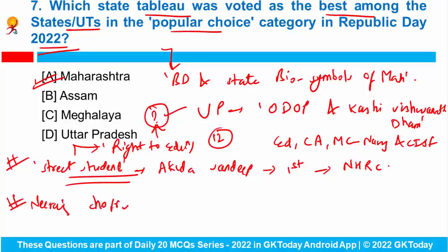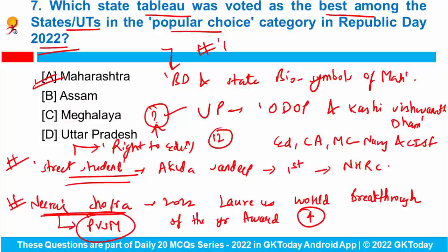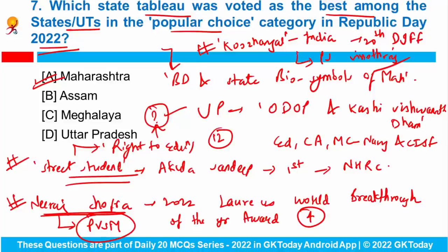Neeraj Chopra has recently been nominated for the prestigious 2022 Laureate's World Breakthrough of the Year Award along with four other nominees. Neeraj Chopra was also in news because he has been awarded the Param Vishishth Seva Medal. A few days back, Kuzangal movie from India won the best film award in the Asian Film Competition section at the 20th Dhaka International Film Festival, directed by P.S. Vinotraj. Can you tell me who has recently been awarded Assam's highest honour named Assam Vibhav? Please write your answers in the comments.